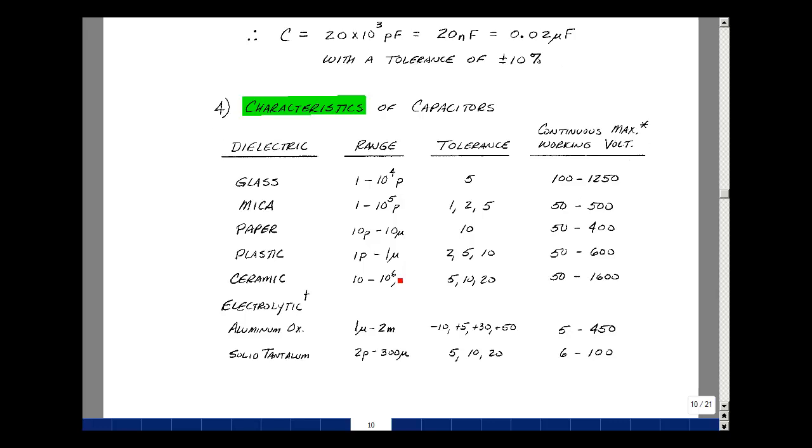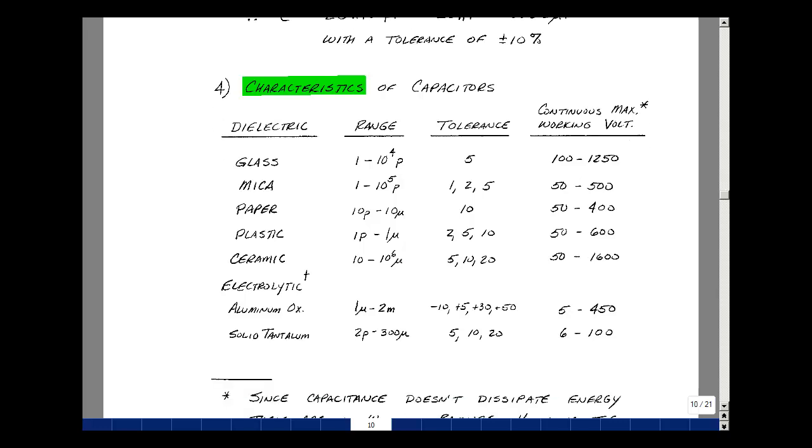Depending on the dielectric, there's a range of capacitance that you can achieve. Dielectrics like glass, mica, paper, plastic, ceramic, and electrolytic. For electrolytic capacitors, there are two different types, aluminum oxide and solid tantalum. The range of capacitance that you can achieve with these different dielectrics are listed here. Not as absolute, but to give you a rough idea that, depending on the size of capacitance you want, you may be limited to the type of dielectric you have to pick. Also, the tolerances that are available for these types of capacitors, and lastly, the maximum working voltage.